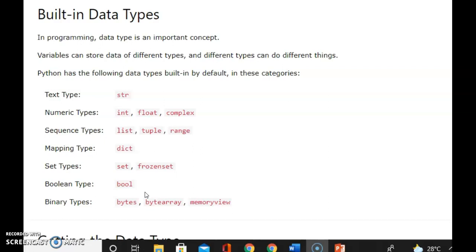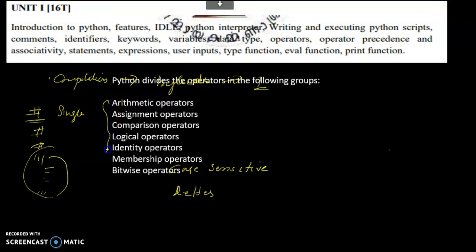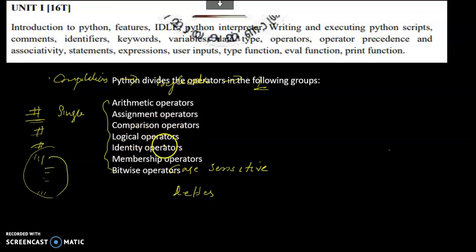The next important thing is Python operators. There are many operators: arithmetic operators, assignment operators, comparison operators, logical operators, identity operators, membership operators, and bitwise operators. If you want to learn these, we will cover them. They also include logical operator types and bitwise operator types.